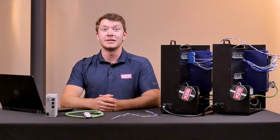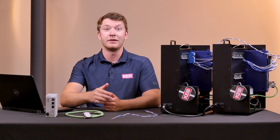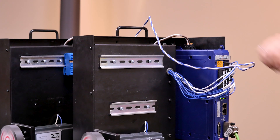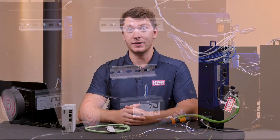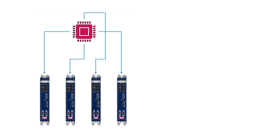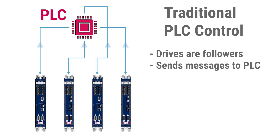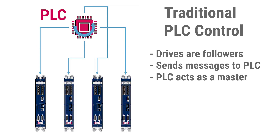CAN cross-communication is a KEB exclusive feature that enables direct data transfer between two drives over just two wires. In traditional CAN open networks, a PLC or some kind of controller would be required to manage all the data traffic going across the drives. The drives would be followers or command receivers, sending messages up to a PLC where those messages would be processed, and the PLC would act as a master, sending commands back to the drives.